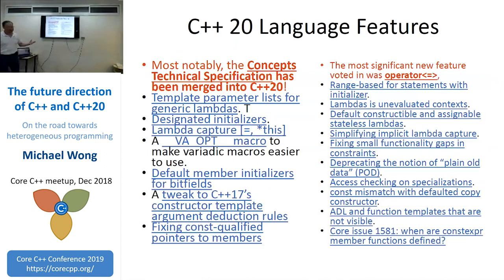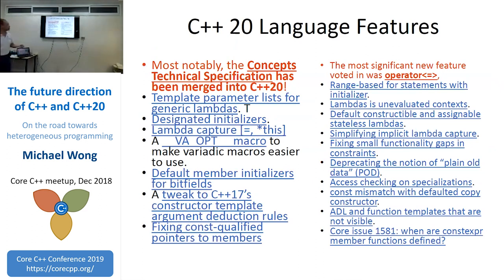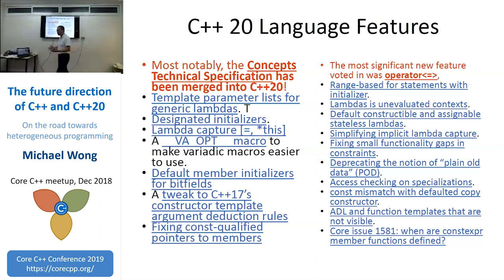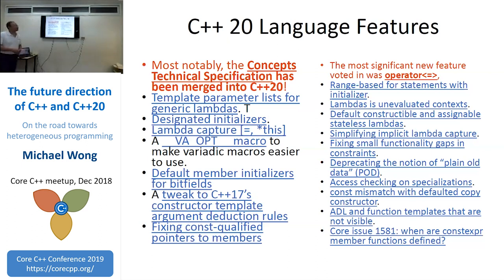Feature by feature, some of the big ones: the concepts technical specification was merged into C++20. The initial step merged the full syntax but did not have the abbreviated function template syntax — what they call AFT. We also got the spaceship operator, which gives you not-equal and equal-equal by default, plus a three-way comparison.